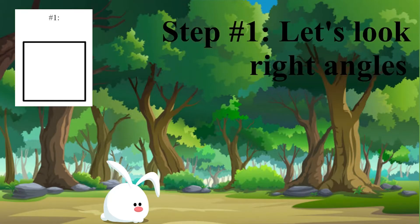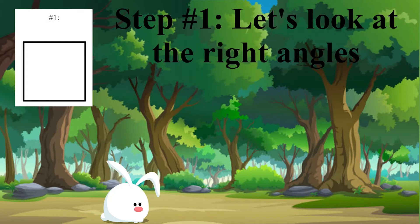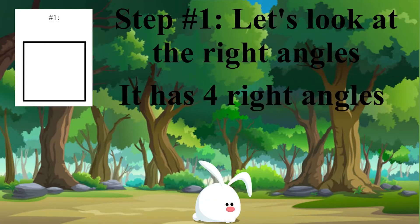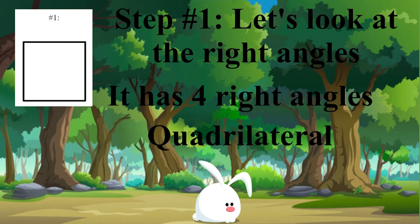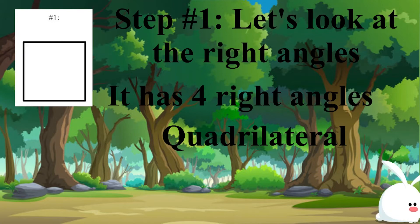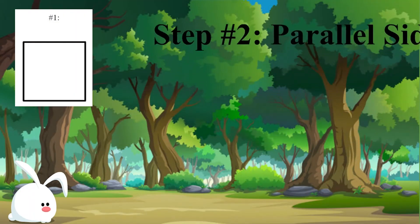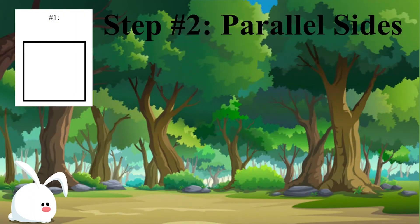Yes it does, so that means it's a quadrilateral. We're also going to look at the right angles. This shape has four right angles, which is a good property to have because it makes it fit into a lot of different categories in the quadrilateral family. So we already know that this is a quadrilateral — that's the first category we can put it in. Now we can move on to step number two and look at the parallel sides of the shape.